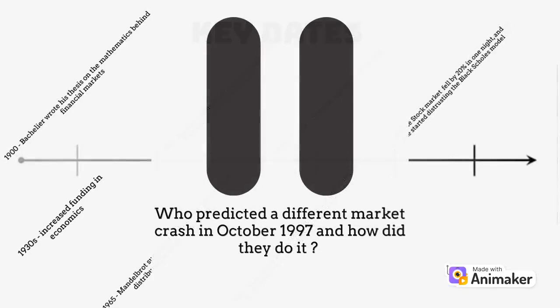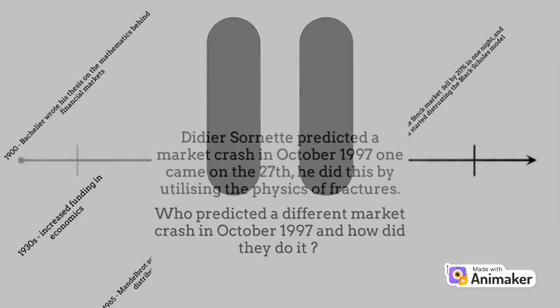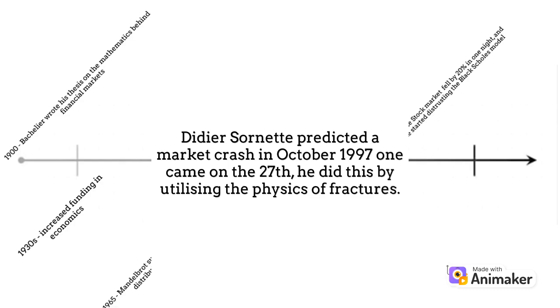Who predicted a different market crash in October 1997? And how did they do it? Didier Sornette predicted a market crash in October 1997. One came on the 27th. He did this by utilizing the physics of fractures.